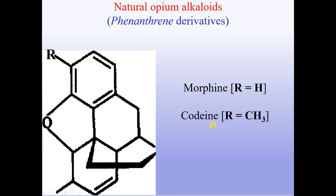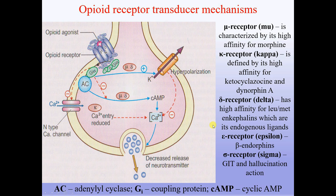Opioid receptor transducer mechanisms: there are five different types of opioid receptors. Mu receptors are characterized by high affinity for morphine. Kappa receptors are defined by high affinity for ketocyclazocine and dynorphin A. Delta receptors have high affinity for leu-met enkephalines, which are their endogenous ligands. Epsilon receptors bind beta-endorphins, and sigma receptors mediate psychotomimetic and hallucinatory actions.